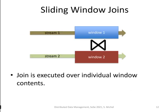For joins it's similar. We have stream one, stream two, window one, window two, and then we compute the join as we know — using hash joins or nested loop joins depending on the predicates — over the tuples which are included in these windows.